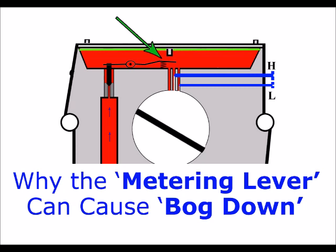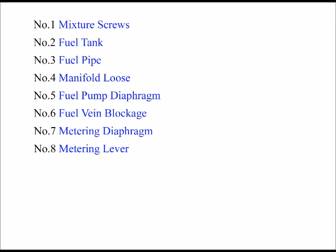I have uploaded the full version with all 12 reasons, but I've broken them down to make it simpler and easier to find the content. So let's assume all's well there, and we'll move on now to my eighth reason for bogging down, and that's the metering lever.